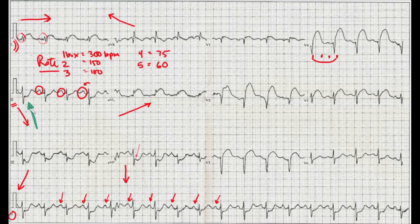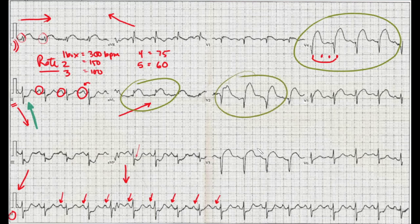So we've gone through rate, rhythm, and axis. But the biggest issue we can clearly see in this patient is not rate, rhythm, or axis — it's the ST segment elevation. We're seeing it especially in AVL and lead V4, as well as in V2 and V3. The key point is that we're also seeing reciprocal ST segment depression in lead III and in AVF.